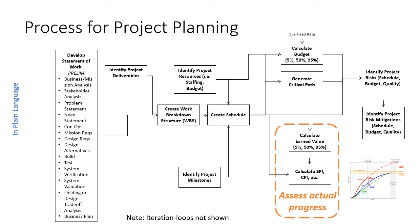As a quick reminder about the role of project assessment and control: starting on the left-hand side, you take requirements — preliminary requirements — and use them to create a work breakdown structure. Based on the WBS, you create a schedule and a budget. Together with the schedule and budget, you are able to assess actual progress using a technique called earned value.